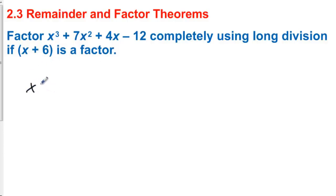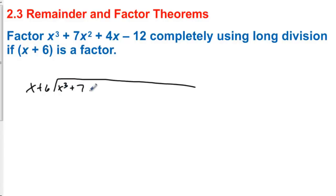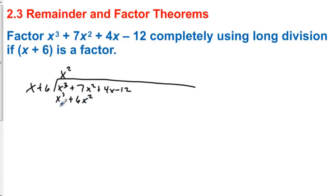It says use long division, so that's the first thing we're going to do. We have x to the third plus 7x squared plus 4x minus 12. We're going to look at the very first terms, and we multiply x times x squared to get x to the third. Then we take x squared times 6 and get 6x squared. And when we do long division, we always subtract. x to the third minus x to the third is zero. 7x squared minus 6x squared is 1x squared.